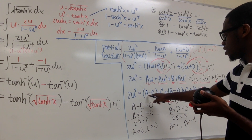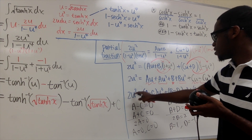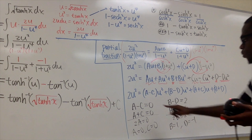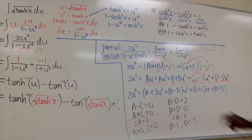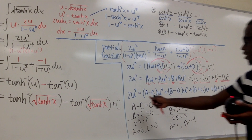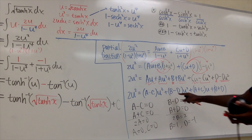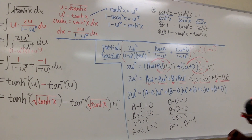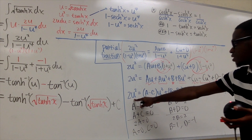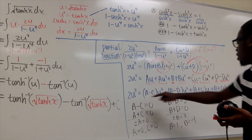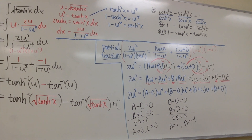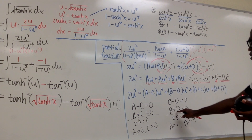Matching coefficients with the left-hand side (which is 2u²): the u³ coefficient gives a − c = 0; the u² coefficient gives b − d = 2; the u coefficient gives a + c = 0; and the constant term gives b + d = 0.